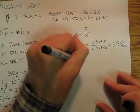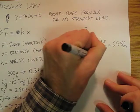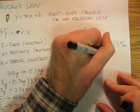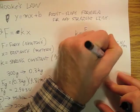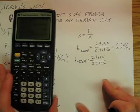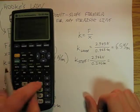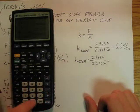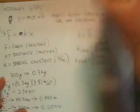And then K-stiff is going to be 2.943 newtons divided by 0.200 meters. And so my stiff spring constant is going to be 2.943 divided by 0.2. We're going to call it 14.7 newtons per meter.